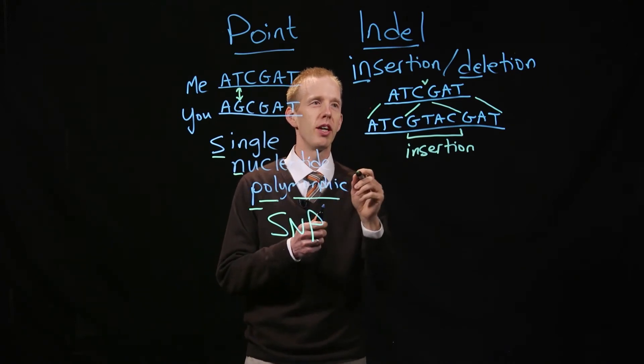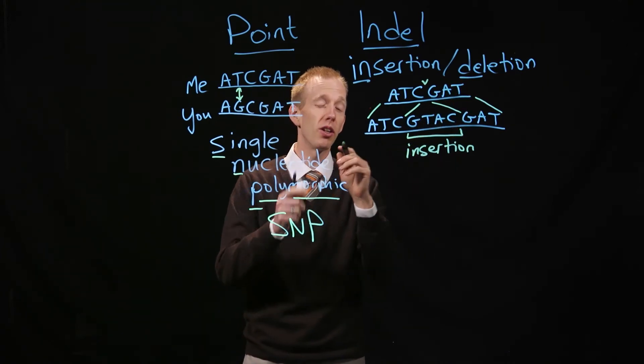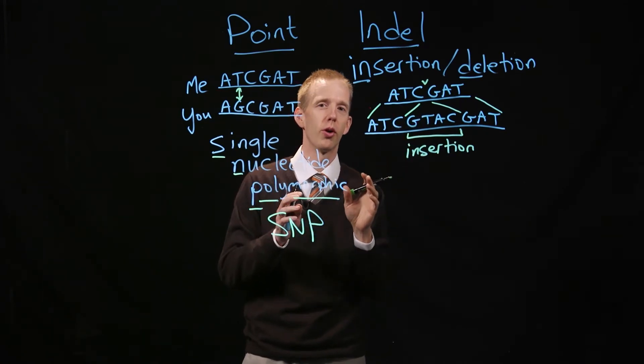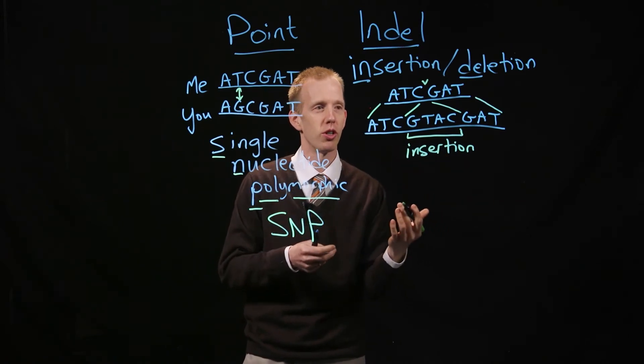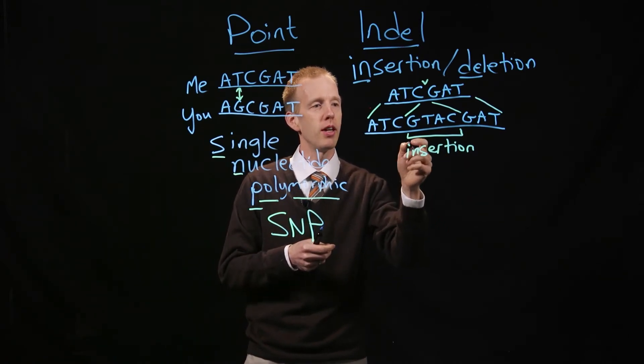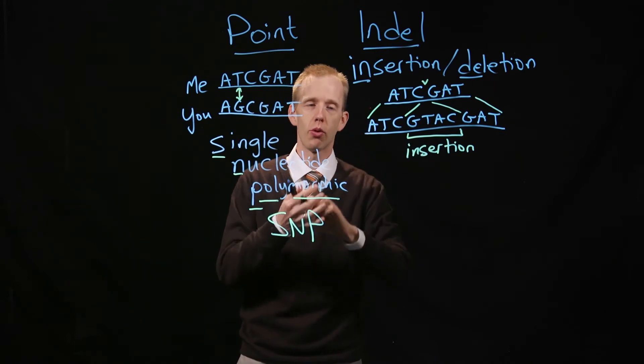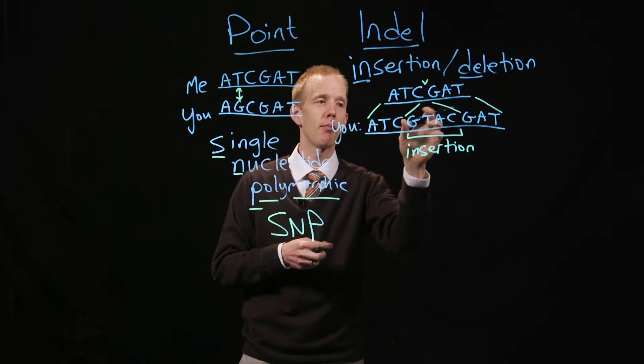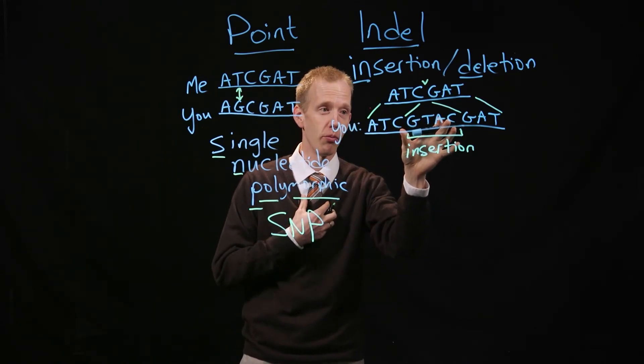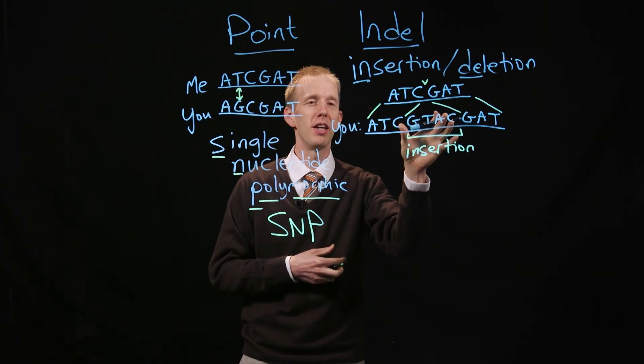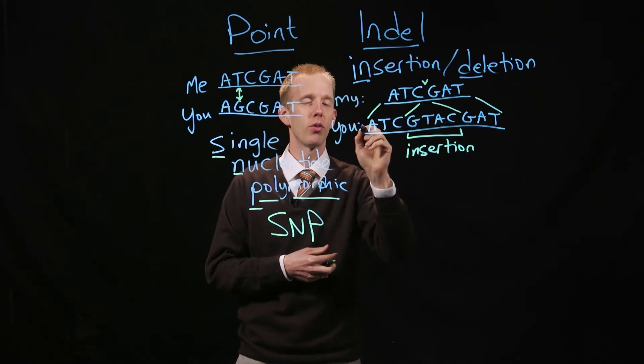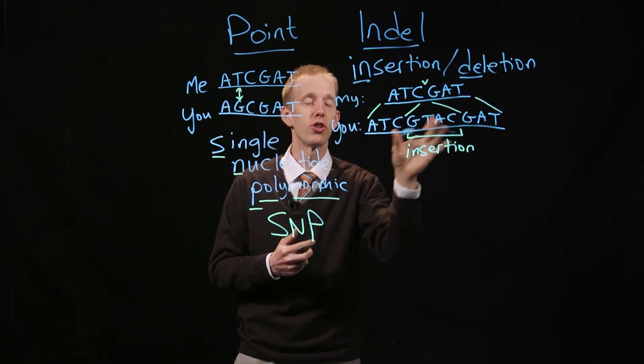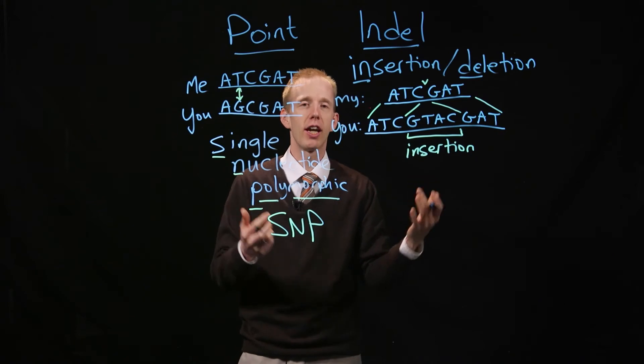The reason that these are called INDEL mutations, insertion or deletion, is because we don't actually know which of these two chromosomes is the original chromosome and which one is the new or mutant version, if you will. It could be that your chromosome, the chromosome down here on the bottom, might have been the original version, and I might have had a deletion of four nucleotides on my chromosome. Or it could be that my chromosome is the original or ancestral version, and that somehow your copy of the chromosome got an insertion of four nucleotides, by chance, at random.